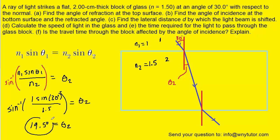So 19.5 degrees is the correct answer for part A of the question, and we can mark it on the diagram. Now part B is asking us for the angle of incidence at the bottom surface. The angle of incidence is always measured with respect to that normal line, so the angle must be touching that normal line. If we look carefully, the two red normal lines are parallel to one another. From basic geometry, when two parallel lines are cut by a transversal, the alternate interior angles are equal. So that angle of incidence at the bottom surface is also 19.5 degrees — the correct answer to part B.